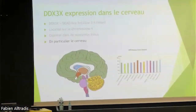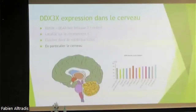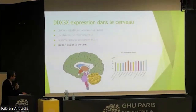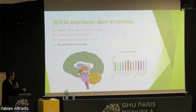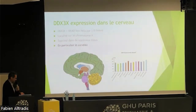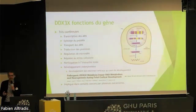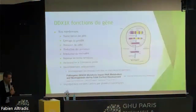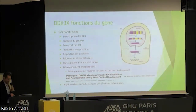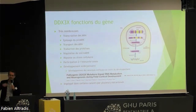If we focus specifically on the brain, DDX3X is expressed almost throughout — except in the corpus callosum. You can see the different brain regions. The cerebral cortex is here, and the cerebellum — the small brain — monitors your balance. I'll try to go a little bit faster now.